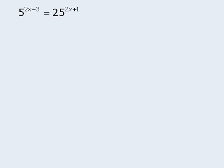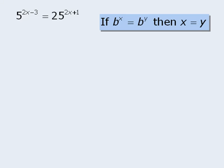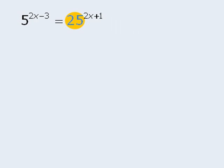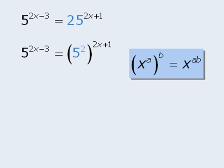Let's try another one. In this equation, we have a base of 5 on the left-hand side and a base of 25 on the right-hand side. To apply our rule, we must have the same base on both sides. To fix this, let's take 25 and rewrite it as 5 squared. Now let's simplify the right-hand side. Since we have a power of a power, we can apply the power of a power rule to see that the right-hand side simplifies to 5 to the power of 2 times 2x plus 1.